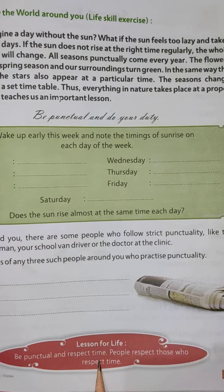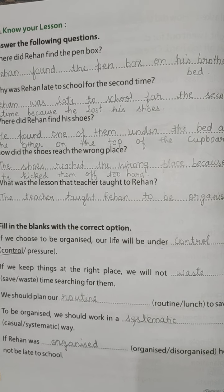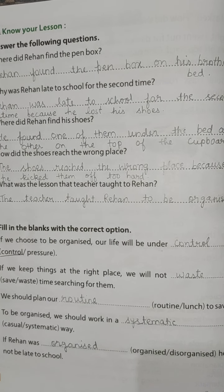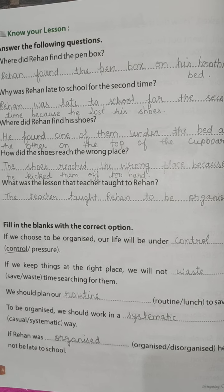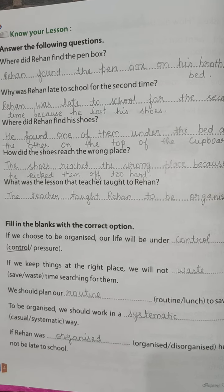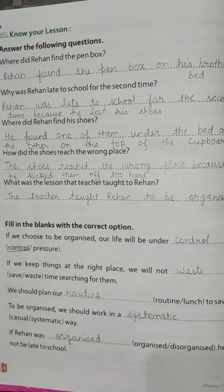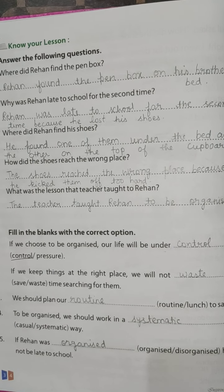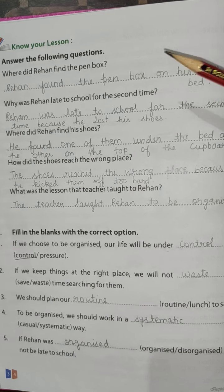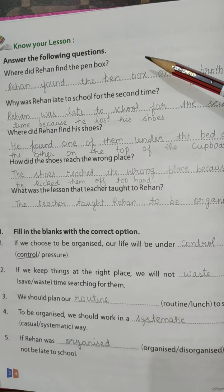The next chapter is Smart Kid. Word meanings will also come, as well as who said to whom and the moral of the story, so kindly learn it properly. Now here are the question answers for the chapter Smart Kid. Where did Rehan find the pen box? Rehan found the pen box on his brother's bed.